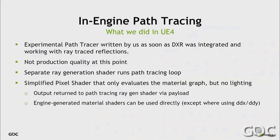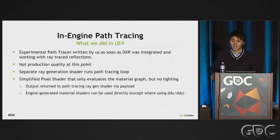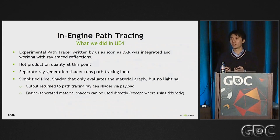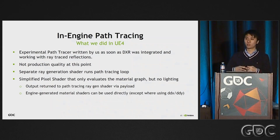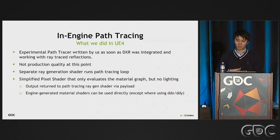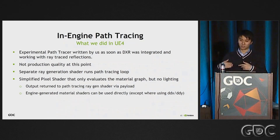We have a prototype reference path tracer in our UE4 integration as a proof of concept — it's not quite at production quality yet. The process is pretty simple: we added a new ray generation shader that runs the path tracing loop logic, and then simplified the base pass material shader in UE4 to not do any lighting, but just output all the material information needed for the path tracer to do additional path scattering. This material information is passed back to the path tracing ray generation shader via payloads. This way, all the material graphs in UE4 can be directly reused — really convenient.